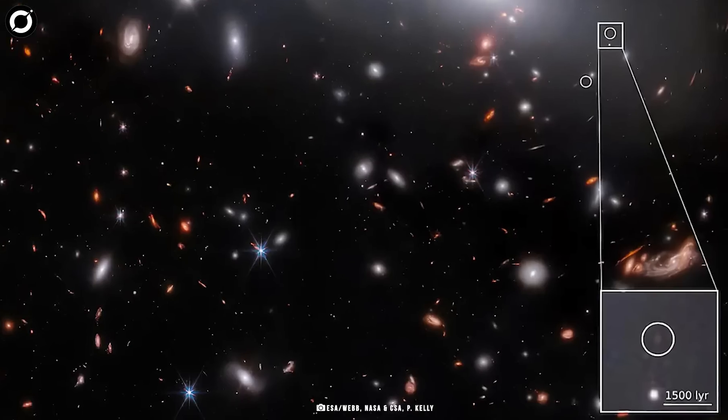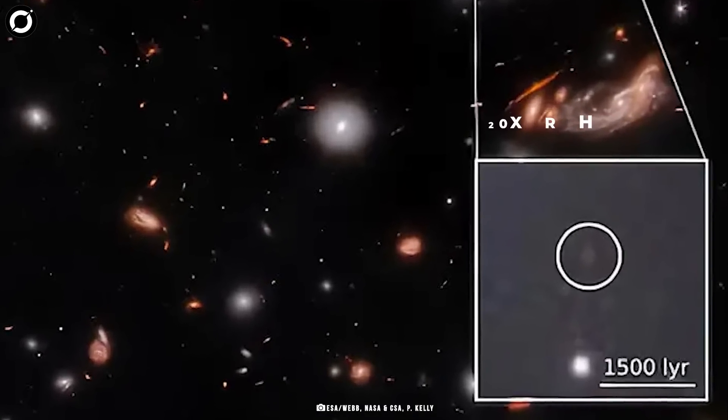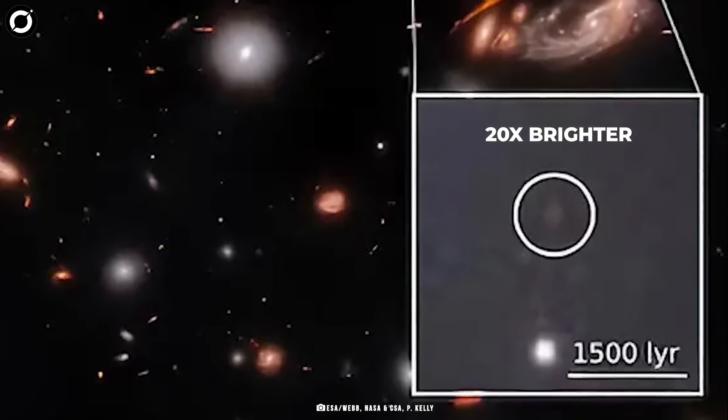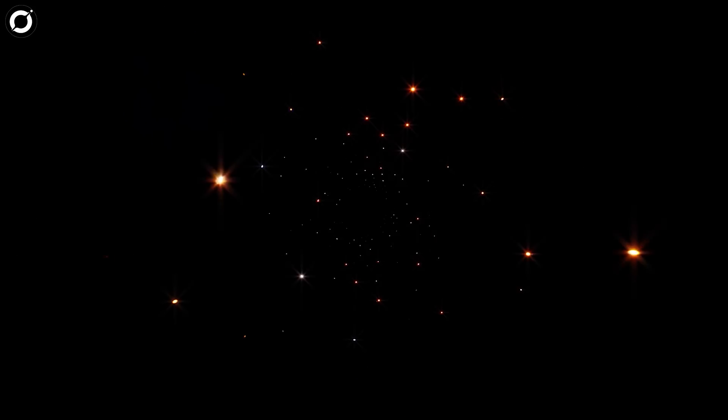Gravitational lensing uses lenses that bend and magnify the light of the mass present in the galaxy or galaxy cluster. Thanks to gravitational lensing, this tiny galaxy appeared 20 times brighter than it would have appeared.